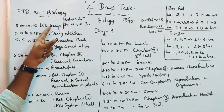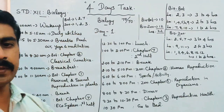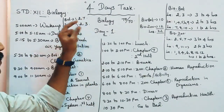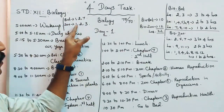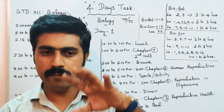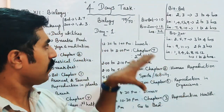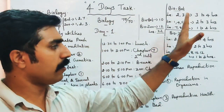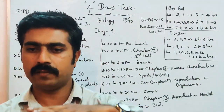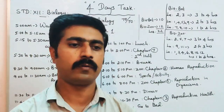Wake up time is 5am. For the first day, we choose lessons: Botany chapters 1, 2, and 7, and Zoology chapters 1, 2, and 3. These are given equal weightage. You can manage the weightage across the day accordingly.